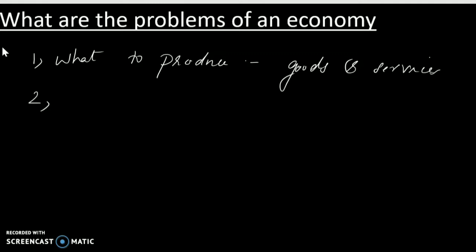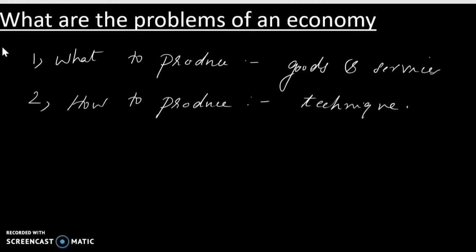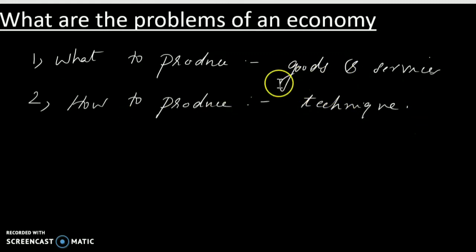The second problem is: How to produce? Which technique do we have to use? There are two techniques — capital intensive technique and labor intensive technique. Capital intensive technique uses capital, while labor intensive technique uses labor.